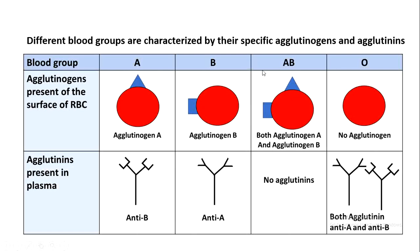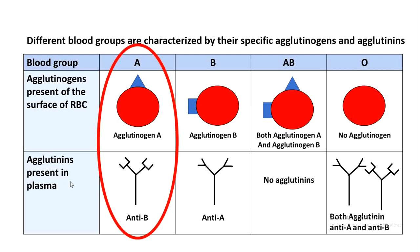In this table we have four blood groups: blood group A, blood group B, blood group AB, and blood group O. Each blood group has a different agglutinogen on the surface of erythrocytes and different agglutinins present in the plasma. Blood group A is characterized by the presence of agglutinogen A on the surface of red blood cells — the red blood cell is enucleated and on the surface there is agglutinogen A, represented by a triangular shape.